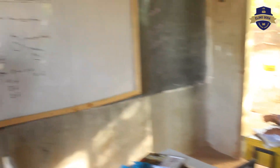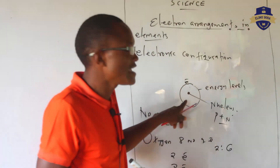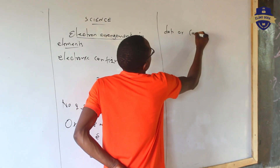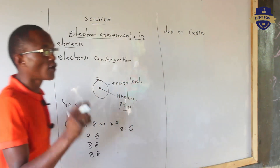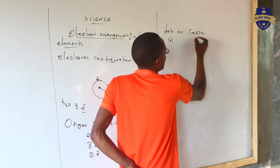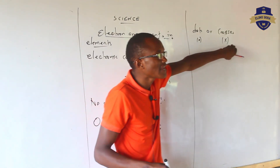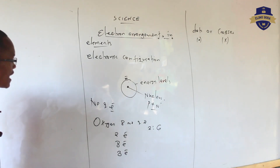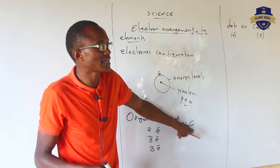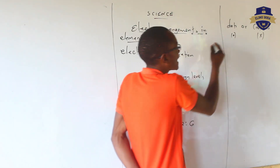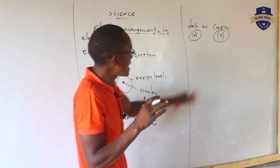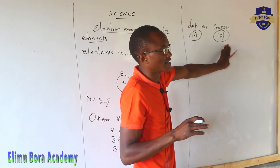When representing electron arrangement in energy levels we use dots or crosses. A dot is something like this, and a cross is an X. So we can either use a dot or use an X. It is up to you as a learner — you cannot mix them. If you decide you are going to use a dot, use it; if you decide to use an X, use it.